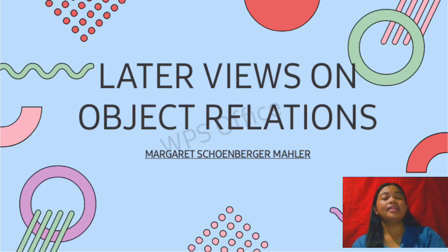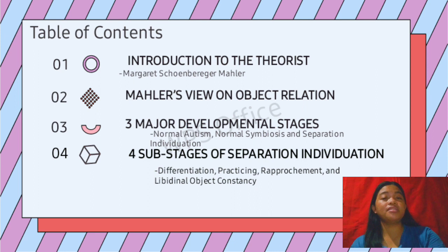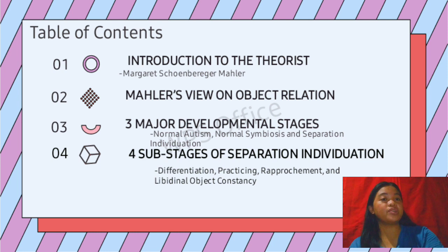Later views on object relation theory. For the table of contents, first we have the introduction to the theorist Margaret Schoenberger-Mahler, then Mahler's view on object relation, then the three major developmental stages: normal autism, normal symbiosis, and separation-individuation. We also have the four sub-stages of separation and individuation: differentiation, practicing, rapprochement, and libidinal object constancy.